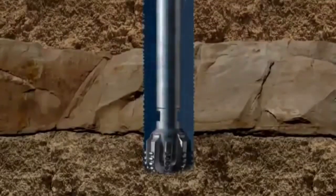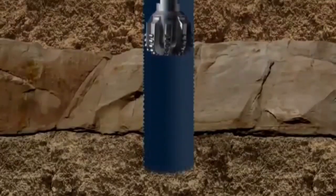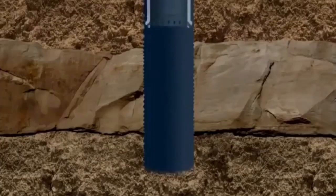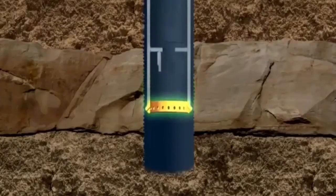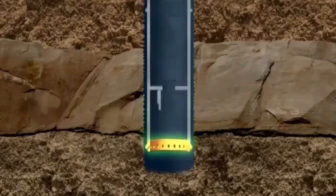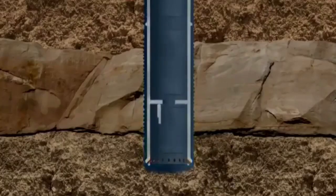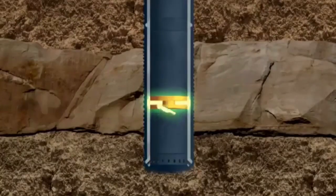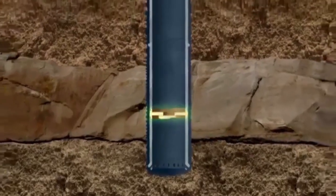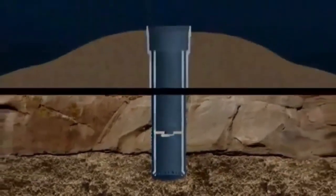A second run of conductor is now lowered into the hole. At the bottom of the conductor is a guide shoe that stops the conductor snagging on the wellbore. Above the shoe is a flap valve called a float collar. A cementing tool is connected to the top of the conductor.